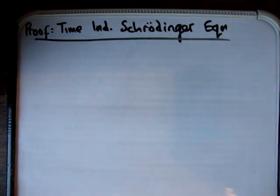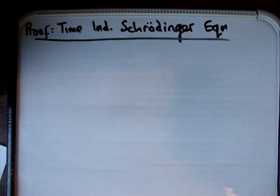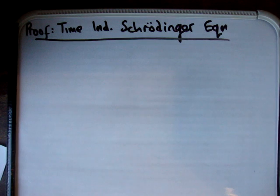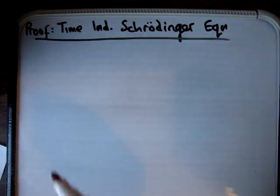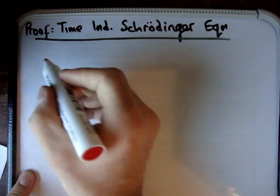In this video I'd like to show you a proof of how to set up the time-independent Schrödinger equation. The first thing I'm going to do is write out the Schrödinger equation.